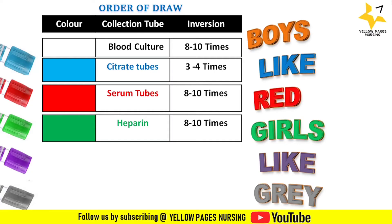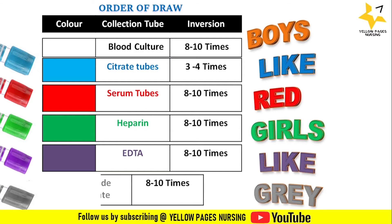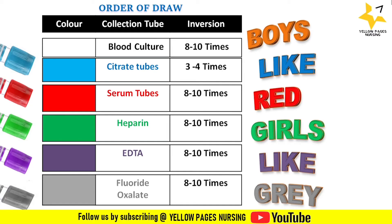Next is the lavender colored tube, otherwise called the EDTA tube, with an inversion time of eight to ten times. Last is the gray colored tube, also called the fluoride oxalate tube, with an inversion time of eight to ten times. There are also other tubes in addition to these, but this covers the main order.